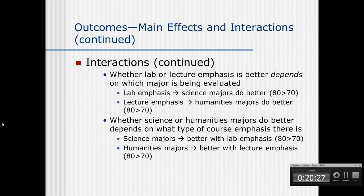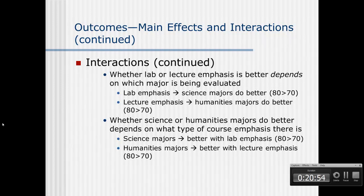In plain English, an interaction means something depends on something else. Whether lab or lecture emphasis is better for students depends on which major is being evaluated. Or we could say whether science or humanities majors do better depends on what type of course emphasis there is. Overall, we can't say that lab or lecture emphasis produces better outcomes — it depends on which major you are. That's what an interaction means: what's going on depends on something else.